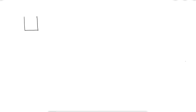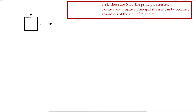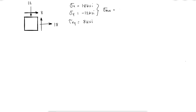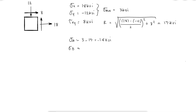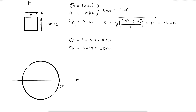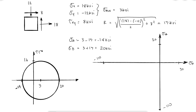Now let's take a look at an example where one principal stress is positive and the other one is negative, where sigma x is 18, sigma y is minus 12, and tau xy is 8. My average stress in this case is 3 ksi and the radius of my Mohr circle is 17 ksi, which means that the lowest principal stress is 3 minus 17 and the maximum is 3 plus 17. Remember that sigma a can be the highest or sigma b can be the highest, regardless of the signs of the principal stresses. The resulting Mohr circle would be a circle with center 3 and radius 17, and depending on the failure criterion that I'm looking at, the stress envelope will look different and therefore my factor of safety will be different.